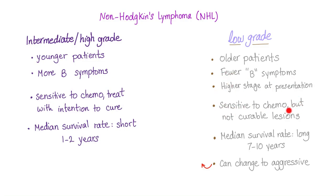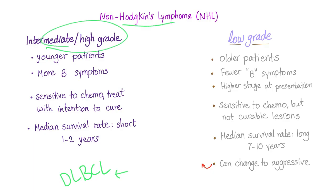Indolent lymphomas are sensitive to chemotherapy, but not curable with chemo. Median survival is relatively long. However, they can transform into an aggressive lymphoma — for instance, follicular lymphoma can transform into diffuse large B-cell lymphoma, which is an aggressive non-Hodgkin's lymphoma. This transformation is usually fatal and carries a very bad prognosis.